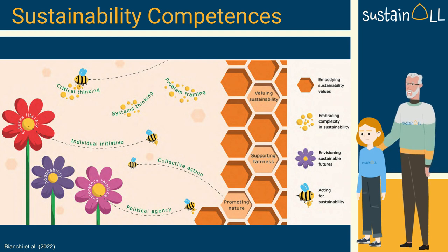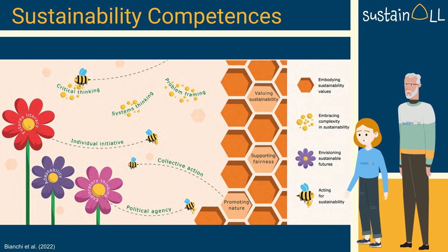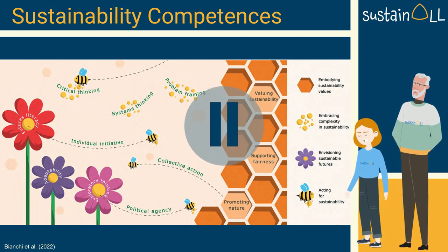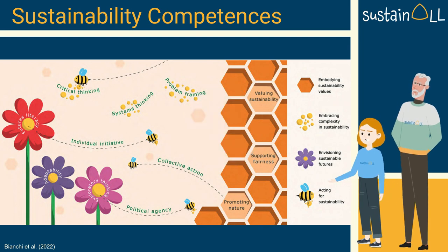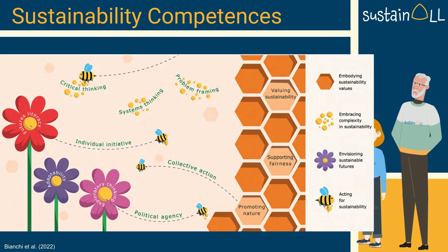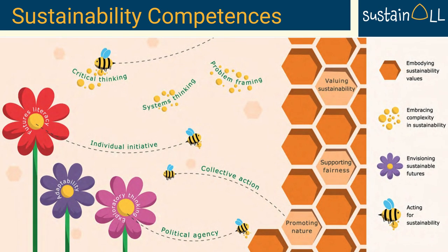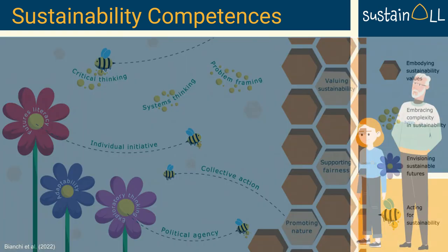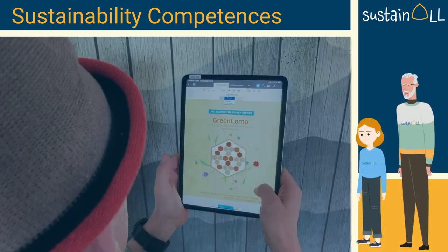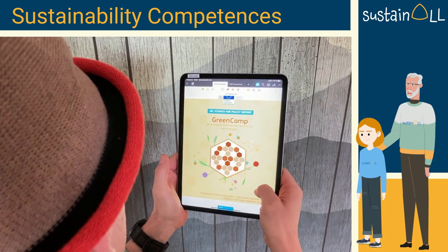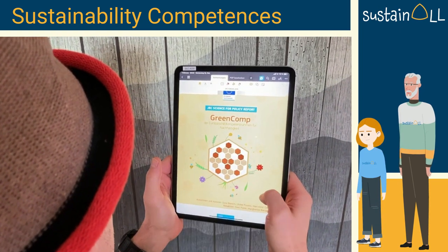The interdependencies between pollen, bees, and flowers ensure the survival of both plants and bees. Pause the video and find a specific example for fostering these interrelated competences in this model. If you want to learn more about the GreenComp framework, you can find the documents in your language and additional materials in this MOOC.